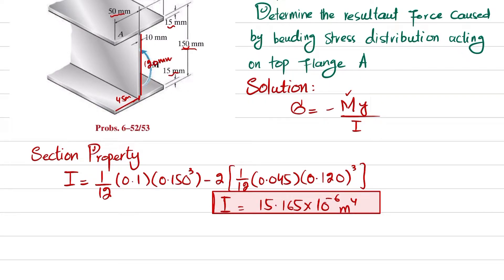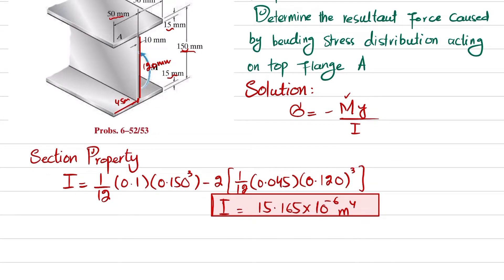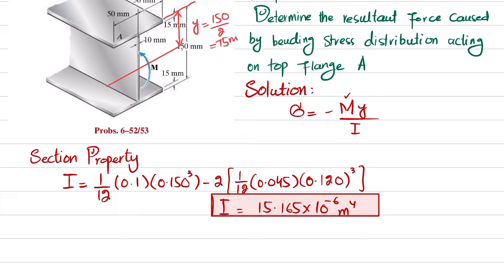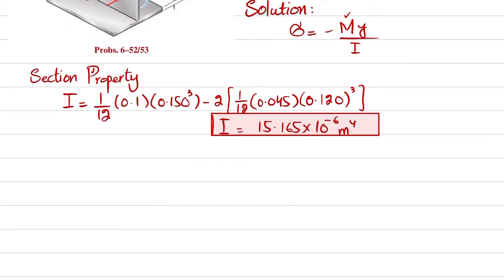Now we find the stress at the top and bottom of flange A. The neutral axis is at the mid of this beam. From the neutral axis to the top, y_t equals 150 divided by 2, which is 75 mm. The distance from the neutral axis to the bottom of the flange, y_b, equals 75 minus 15, which equals 60 mm.